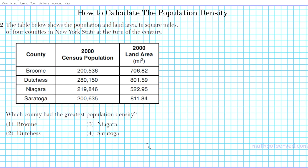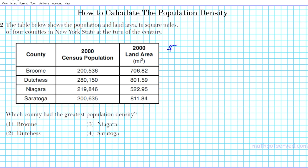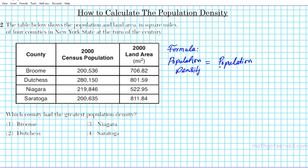Before we get started, we're going to take a look at the formula for computing population density. The formula is: population density is given by the population divided by the area. We're going to carry out this quotient computation four times in order to find the population density of each of the four counties.